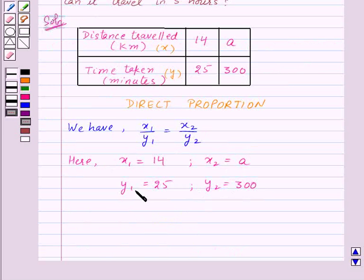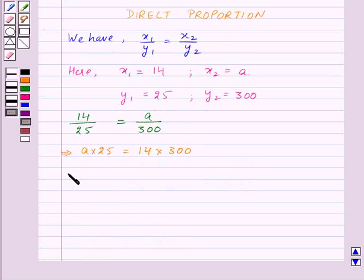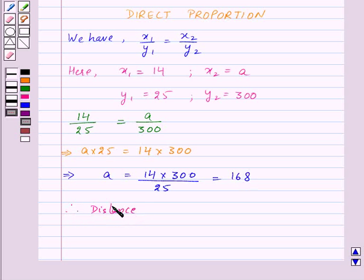Now substituting these values in this relationship, we get 14 upon 25 is equal to a upon 300. On cross multiplying, this gives a into 25 is equal to 14 into 300. This implies a is equal to 14 into 300 upon 25, which is equal to 168.